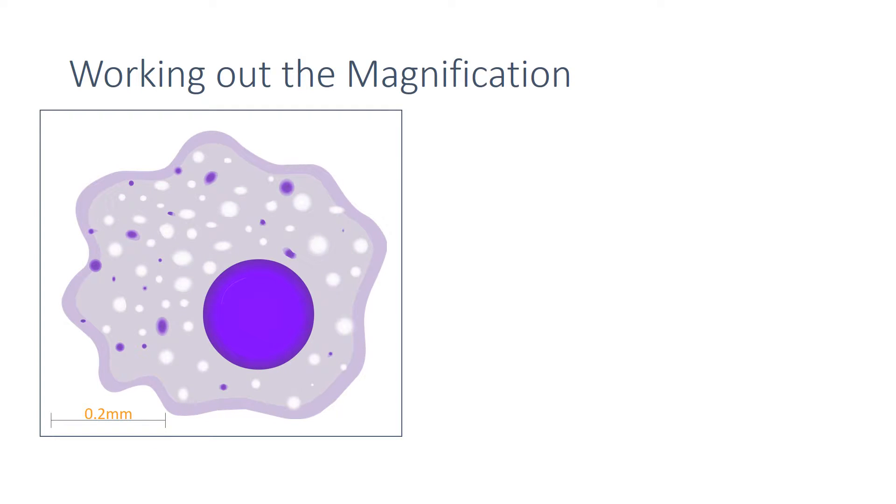In an exam, you may also get asked to work out the magnification from a diagram of a cell. For this, you'll need to be able to use the equation: magnification equals the size of the image divided by the size of the real object.